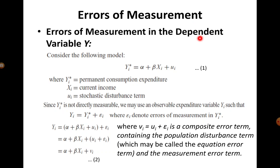The first section concerns an error of measurement in the dependent variable Y. The example model is: yi* = α + β·xi + ui, where ui is the stochastic disturbance term, xi is current income, and yi* represents permanent consumption expenditure. This model is based on Milton Friedman's permanent income hypothesis.